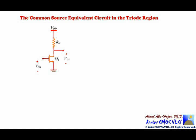We would like to find an equivalent circuit for this transistor in the triode region. In the triode region, the drain-to-source channel behaves as a resistor.